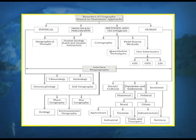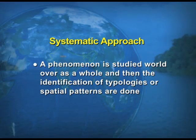Now if we have a look at this diagram, you can see that the branches of geography based on the systematic approach are: physical geography, principles or philosophy of geography, methods and techniques of geography, and human geography.